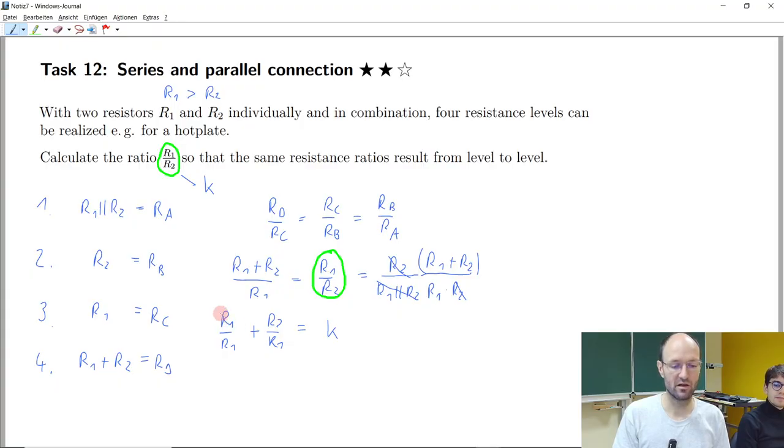And R1 divided by R1 is just one, and R2 divided by R1 is one over K. It's the same as K, but it's the reciprocal of K.